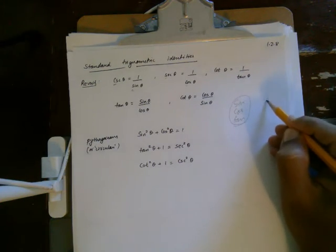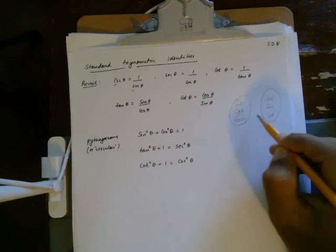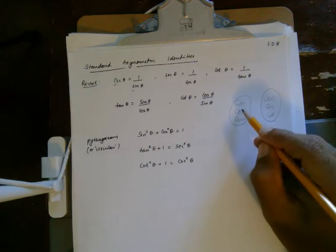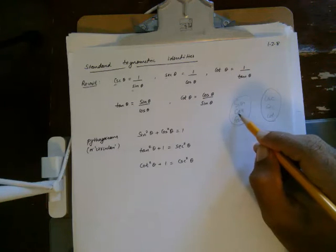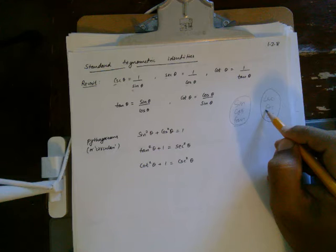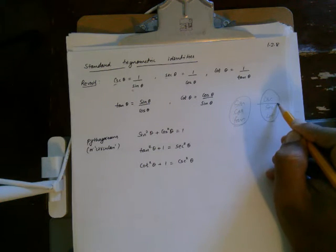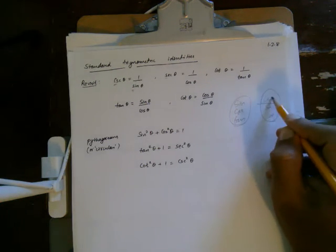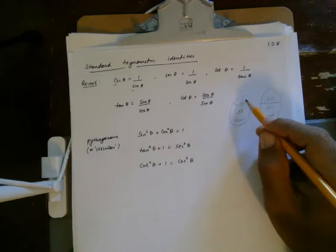Always remember that sine, cosine, and tangent are in one bucket, and their reciprocals are in another bucket. If you're trying to find the reciprocal of cosine, because it's a C it goes to S — so it's secant. If you're trying to remember what cosecant is, because it's a C in that bucket it's going to be 1 over sine.